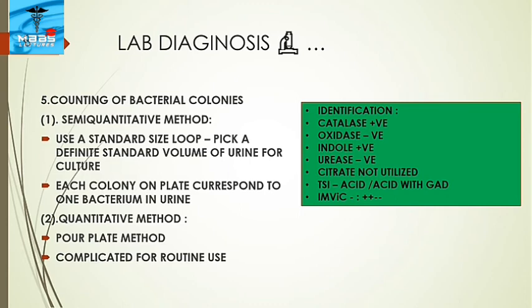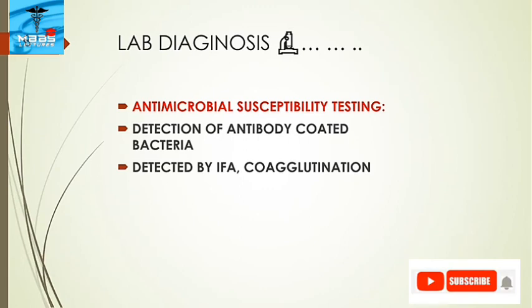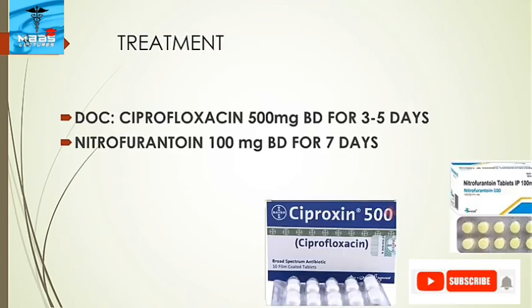E. coli identification: it is catalase positive, oxidase negative, indole positive, and urease negative. Citrate is not utilized; on TSI, acid/acid with gas is produced. IMViC pattern: positive, positive, negative, negative. Antimicrobial susceptibility testing detects antibody-coated bacteria by IFA or co-agglutination methods. Treatment: the drug of choice is ciprofloxacin 500 mg twice daily for 3 to 5 days; nitrofurantoin 100 mg twice daily for 7 days is also given.